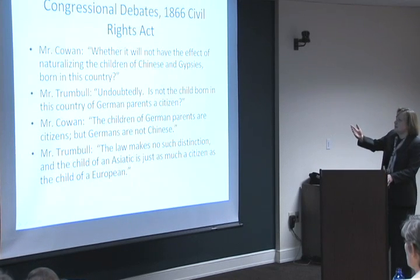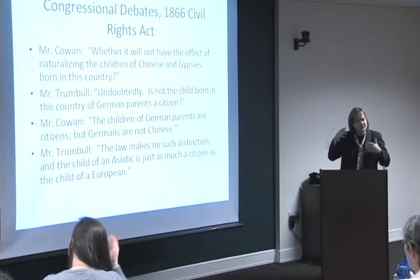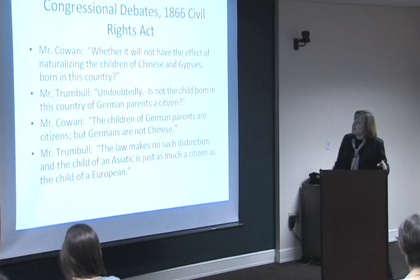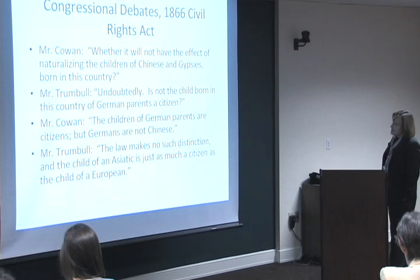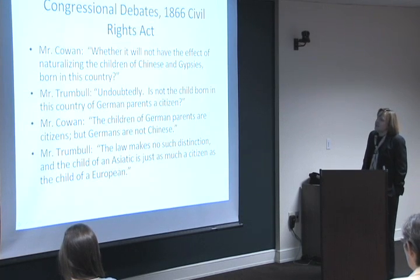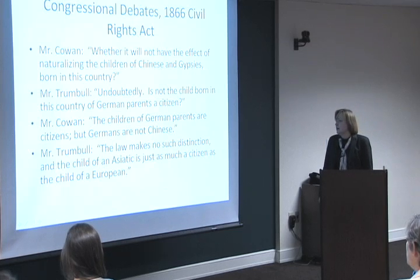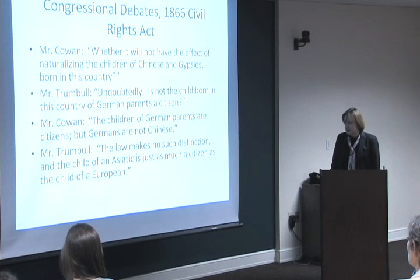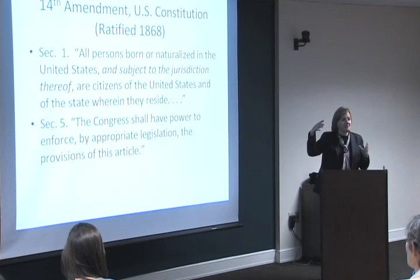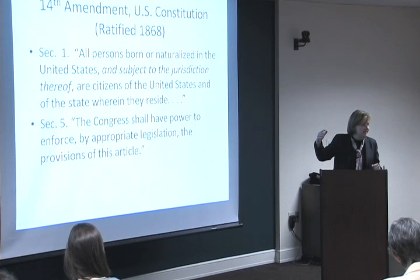In terms of the congressional debates over the Civil Rights Act, here is an exchange between two senators: Mr. Cowan asked whether it would have the effect of naturalizing the children of Chinese and Gypsies born in this country. Mr. Trumbull replied: 'Undoubtedly. Is not the child born in this country of German parents a citizen?' Mr. Cowan replied: 'The children of German parents are citizens, but Germans are not Chinese.' Mr. Trumbull responded: 'The law makes no such distinction, and the child of an Asiatic is just as much a citizen as the child of a European.' So you can see there was an alteration in language — the 14th Amendment is more succinct than the 1866 Civil Rights Act.